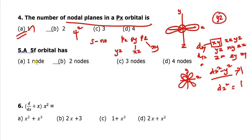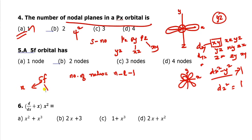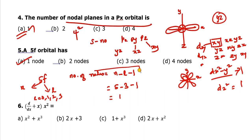Question 5: A 5f orbital has how many nodes — 1, 2, 3, or 4? The formula for the number of radial nodes is n minus l minus 1. For the 5f orbital, n equals 5 and for an f orbital l equals 3. Substituting: 5 minus 3 minus 1 equals 1. Your answer is A — 1 node.